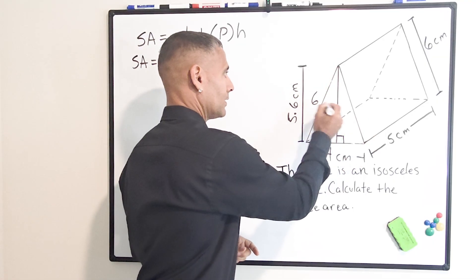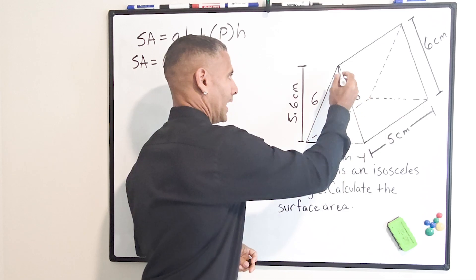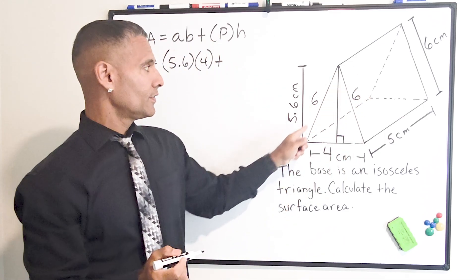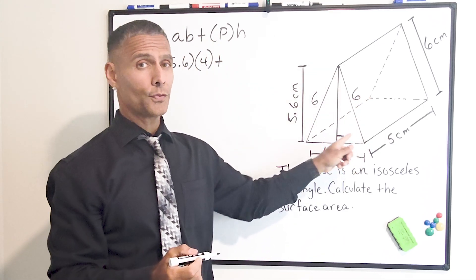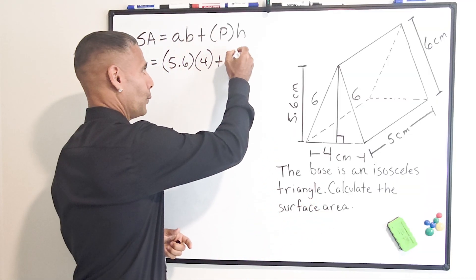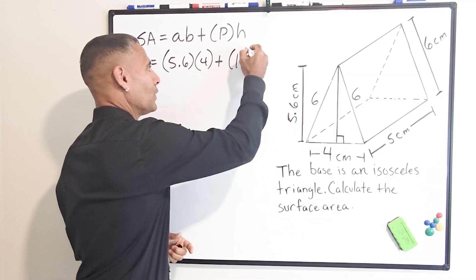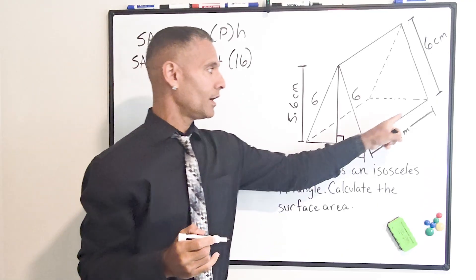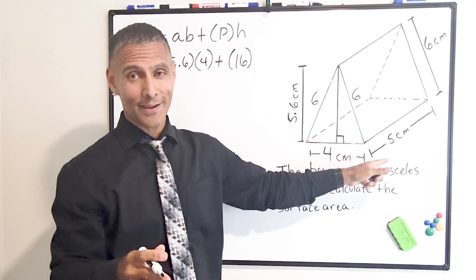So I'm going to put a six here and a six here and add those three sides together. Six plus six is 12 and 12 plus four is 16. We're going to substitute capital P with 16 and multiply that by the height of our triangular prism, which is five centimeters.